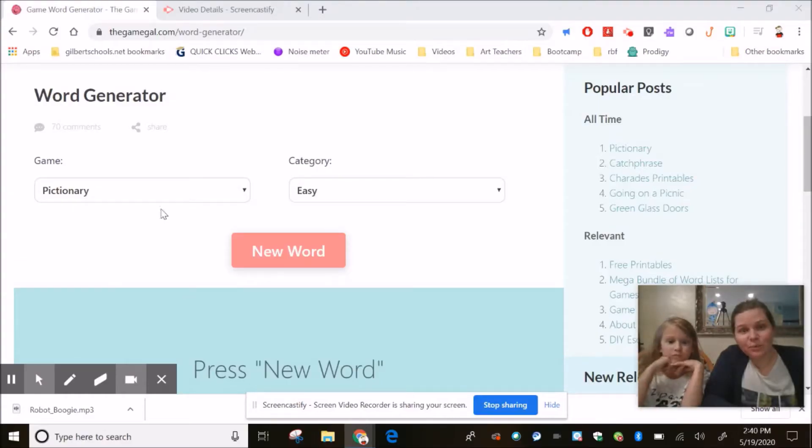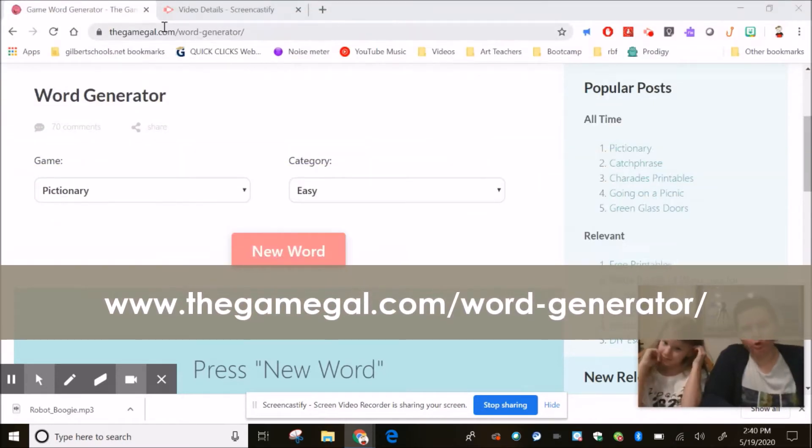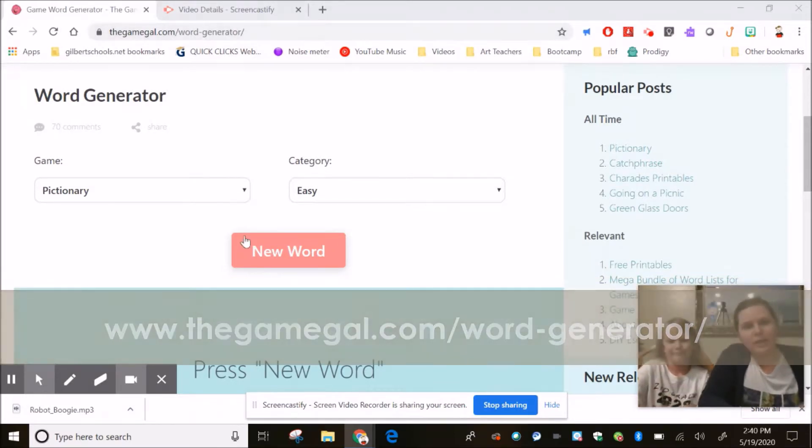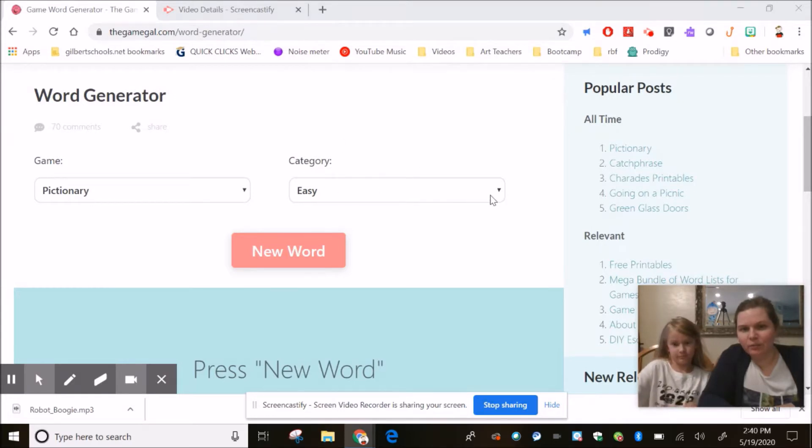Okay, so this is the website that we're going to get our words from. It's called thegamegal.com/word-generator. We are playing the game Pictionary, so I just changed it to Pictionary and category easy. Now if you want to make it harder, you can switch it to hard.